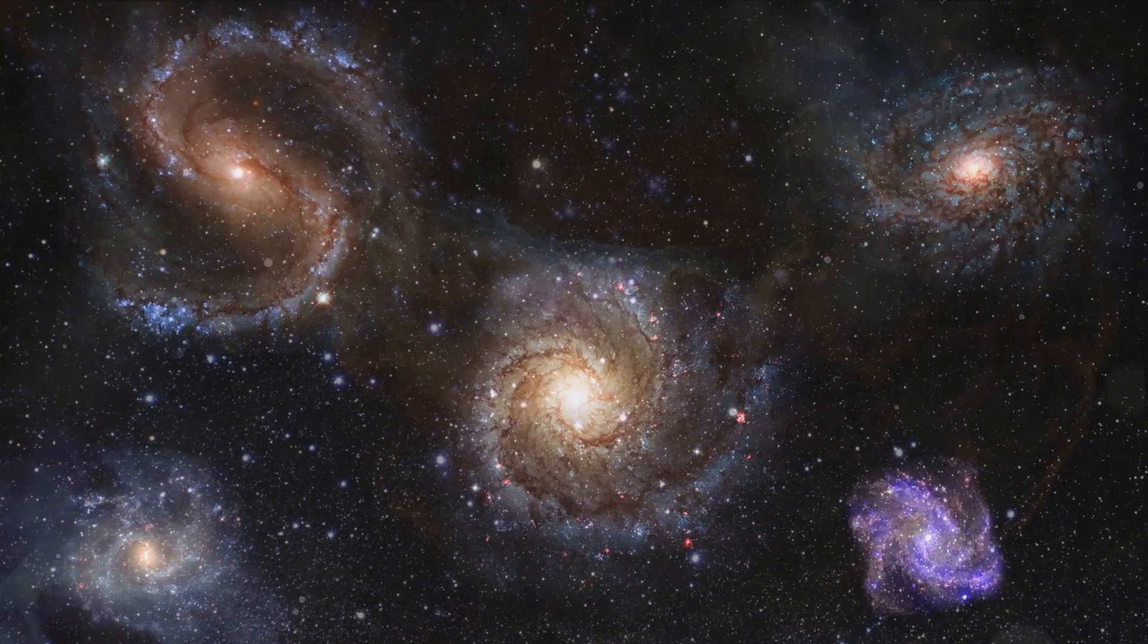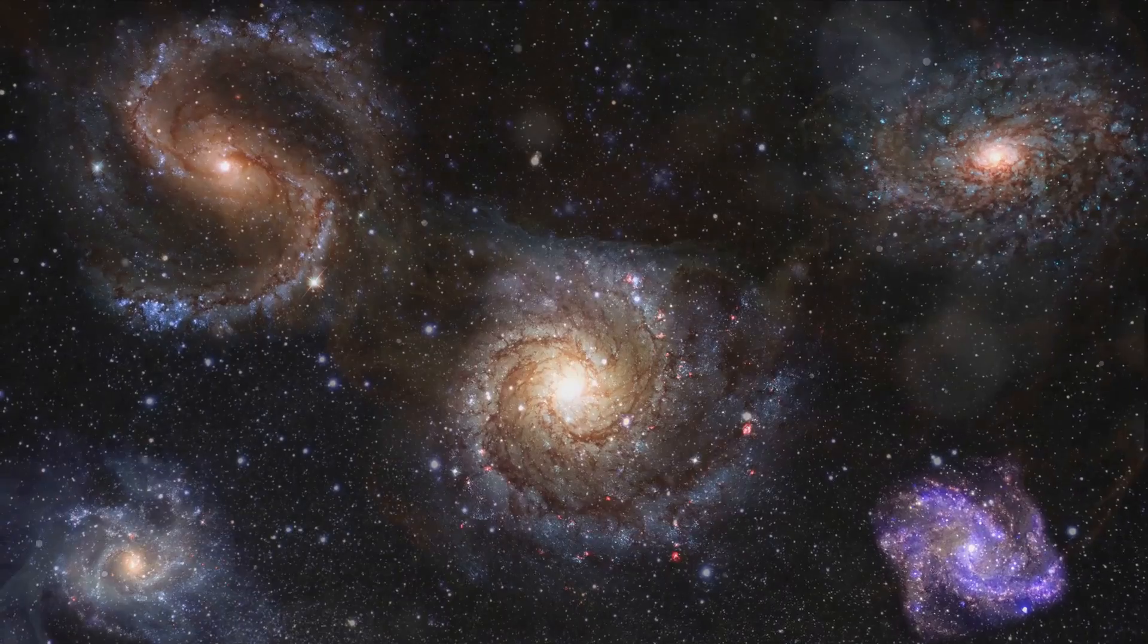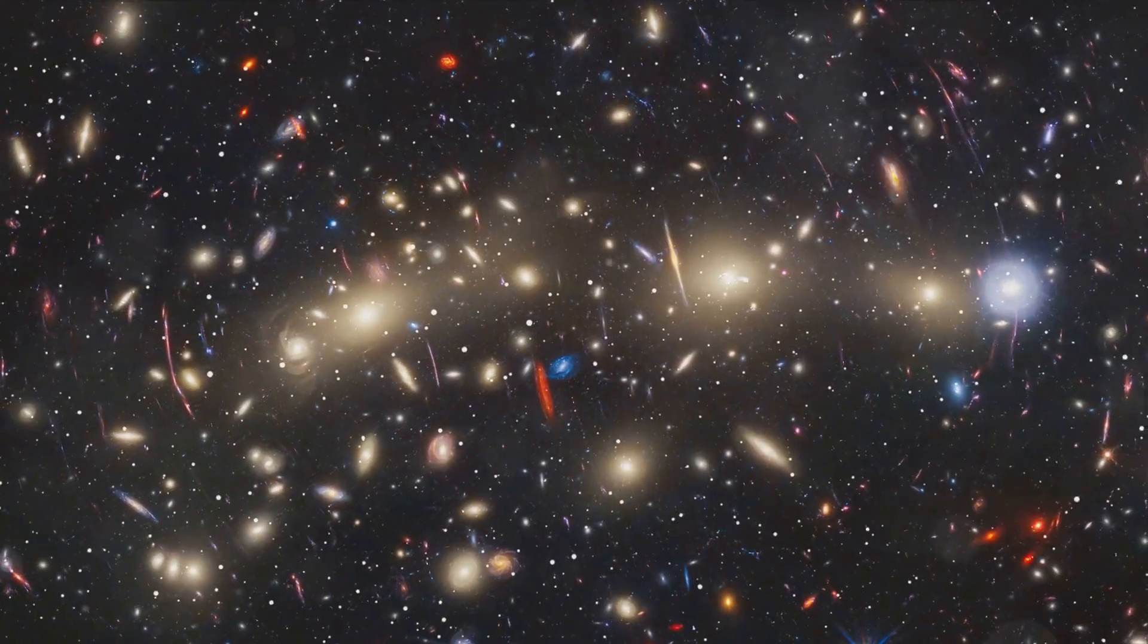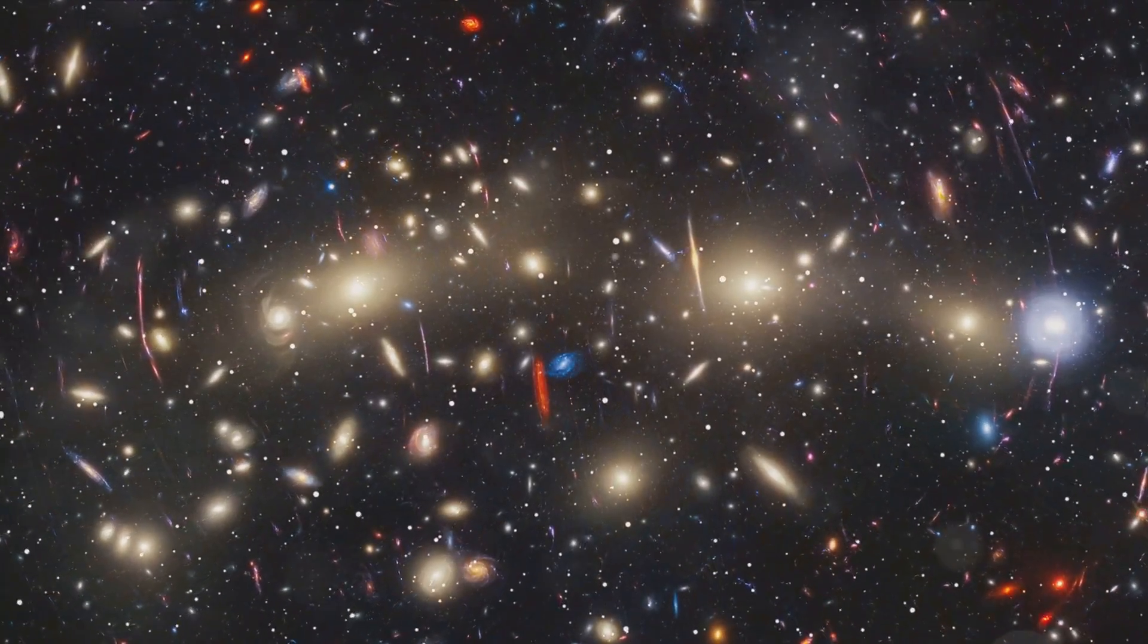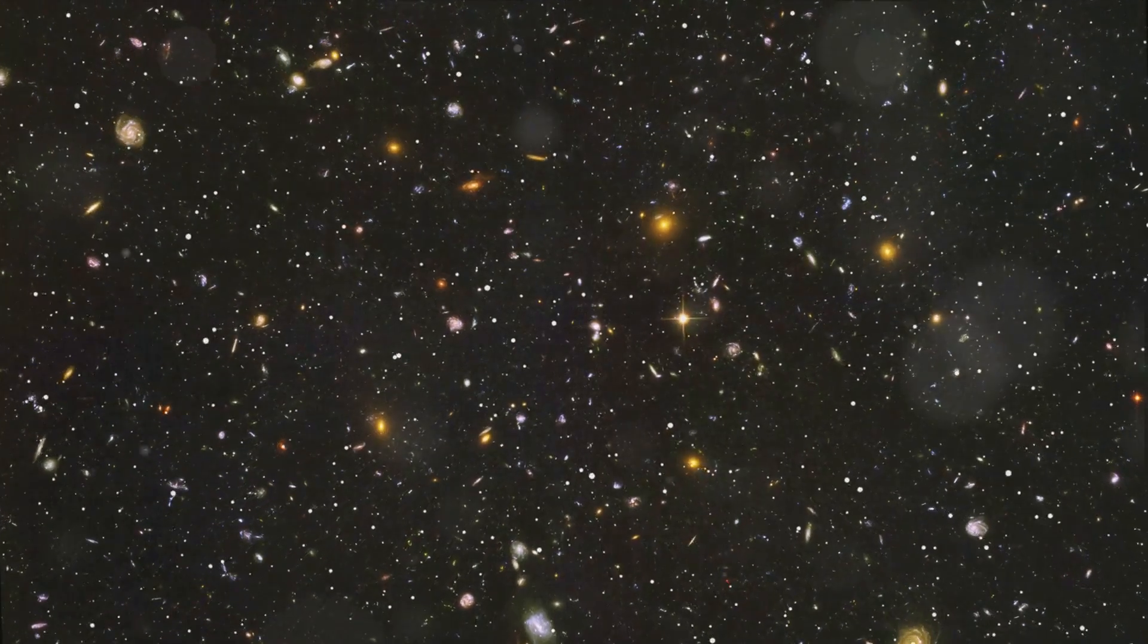Our galaxy is situated within a larger cosmic structure known as the local group, which is a small cluster of galaxies. The local group is part of the Virgo supercluster, which contains hundreds of galaxy groups and clusters.